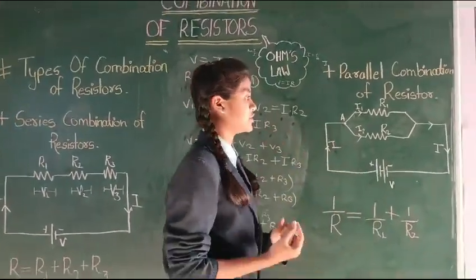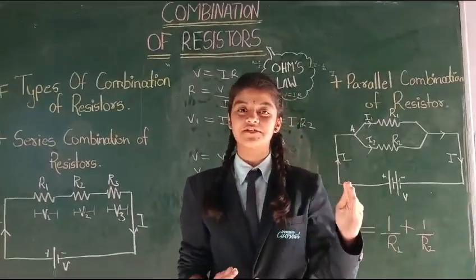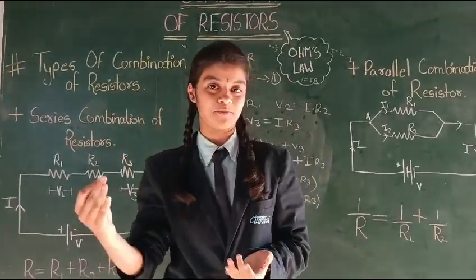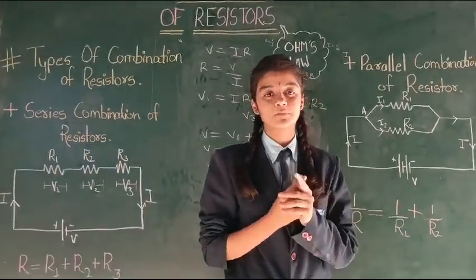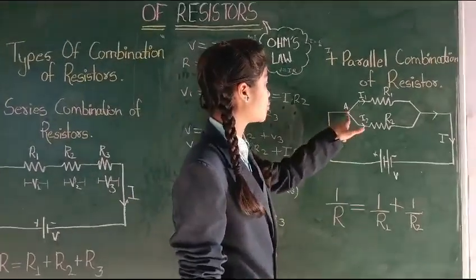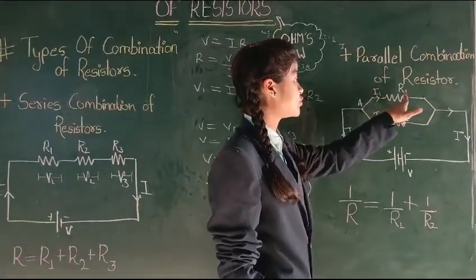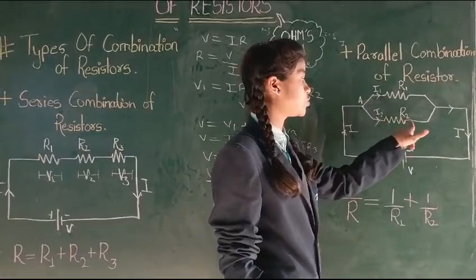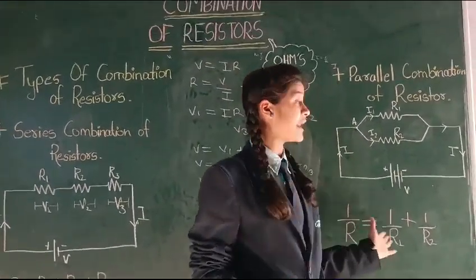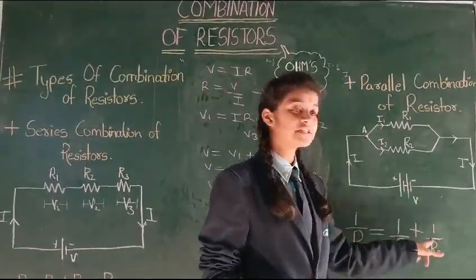Second is parallel combination of resistors. In the parallel combination of resistors, one end of the resistor is connected to one point and another end of the resistor is connected to another point. When the current flows to point A, it splits into R1 and R2. We have the formula for parallel combination of resistors, that is 1 by R equals to 1 by R1 plus 1 by R2.